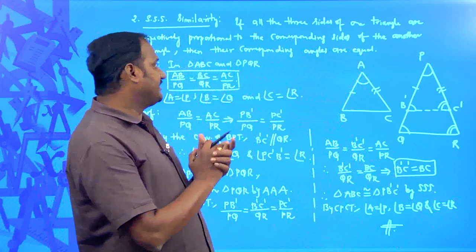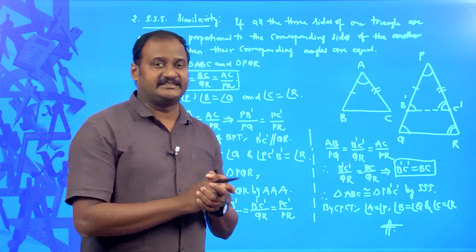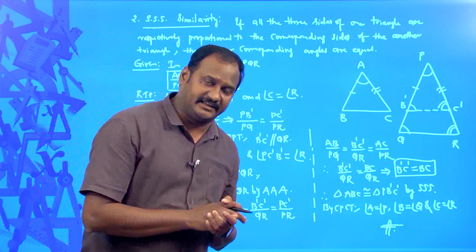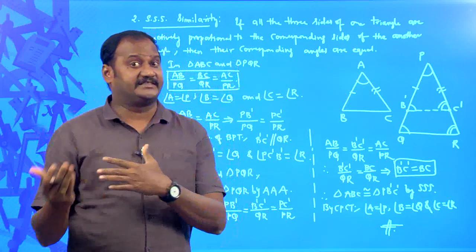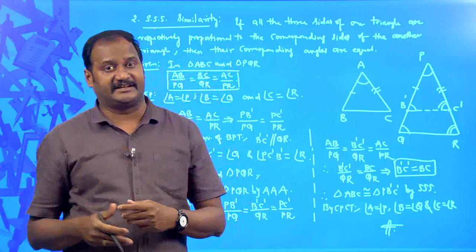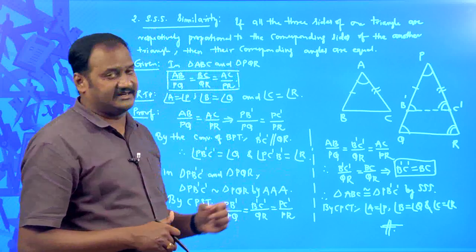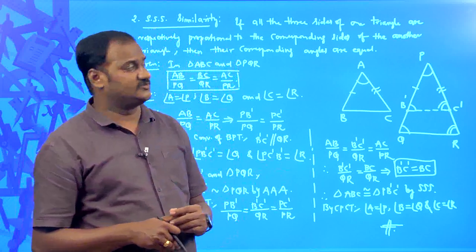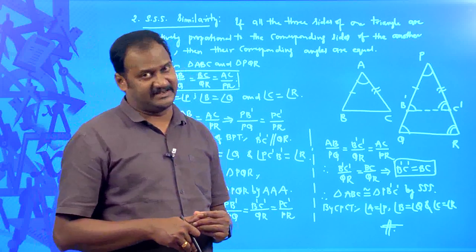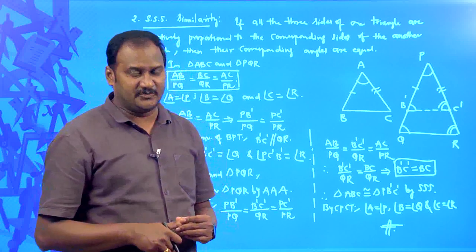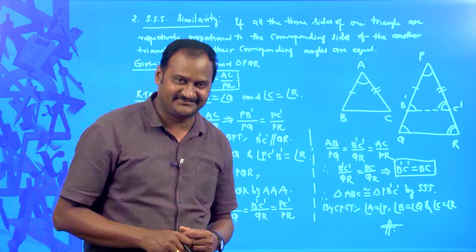According to the SSS similarity criterion, if three sides of one triangle are respectively proportional to the corresponding three sides of another triangle, then their corresponding angles are equal. This is SSS similarity. Hope you understand. Thank you.